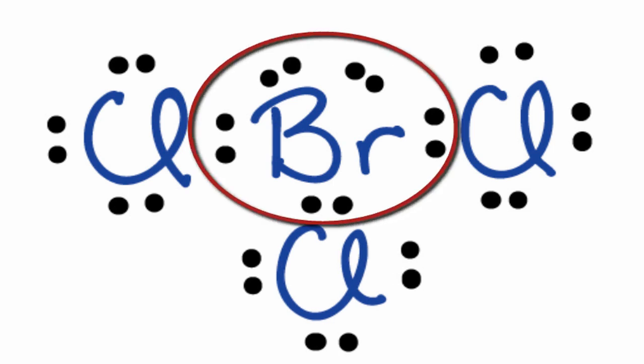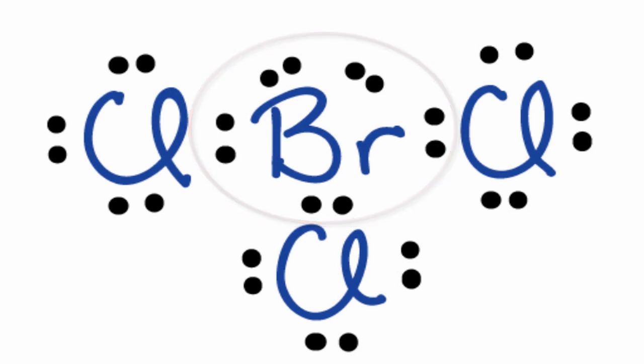So Bromine's going to have more than 8 valence electrons, but that's okay—it's below period 2, row 2, on the periodic table, that means it can have an expanded octet.